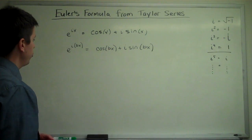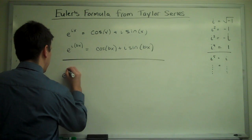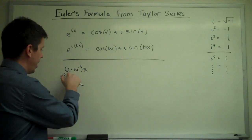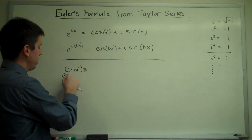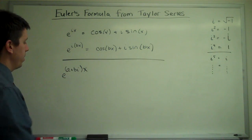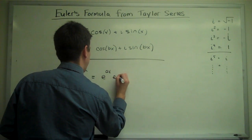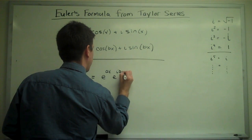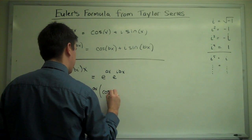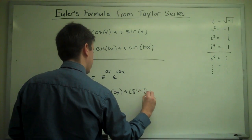It also allows us to write what's called a complex exponential: e to the a plus b i x. This now being any constant number times x, not just a real number, but any complex number with a real part and an imaginary part times x would be e to the a x times e to the i b x equals e to the a x times cosine b x plus i sine b x.